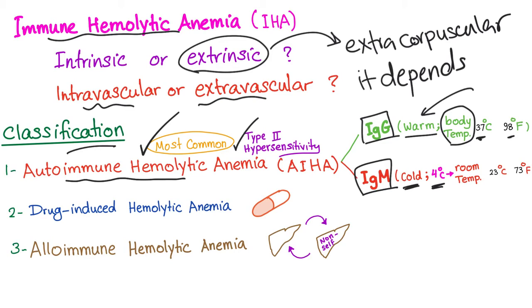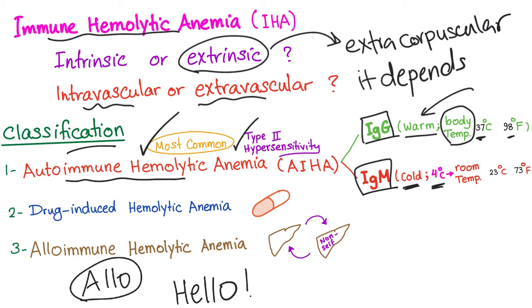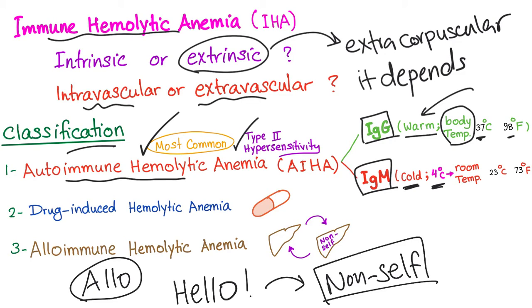What does alloimmune mean? Think of the word 'hello' — it's a word common across different languages and cultures. When you answer the phone, you say hello, and you are talking to non-self. Nobody talks to himself on the phone. So 'allo' means non-self — you are reacting to non-self antigens, such as in transplant.